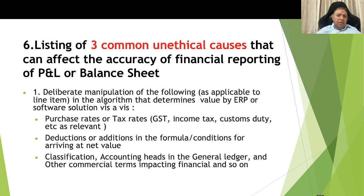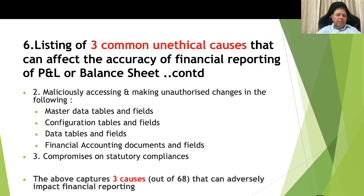Listing of 3 common unethical causes: Number 1 is deliberate manipulation of the algorithm that determines value in the ERP or software solution, affecting purchase rates, tax rates like GST, income tax, or customs duty, reduction or addition in formula conditions for arriving at net value, classification and accounting heads in the general ledger, and other commercial terms impacting financials. Number 2 is maliciously accessing and making unauthorized changes to master data tables and fields, configuration tables and fields, data tables and fields, and financial accounting documents. Number 3 is compromising statutory compliances including the filing of returns. These 3 causes bring the total to 68.